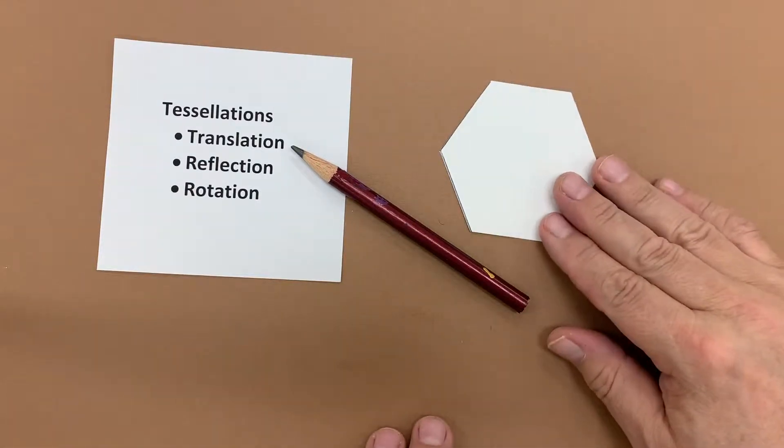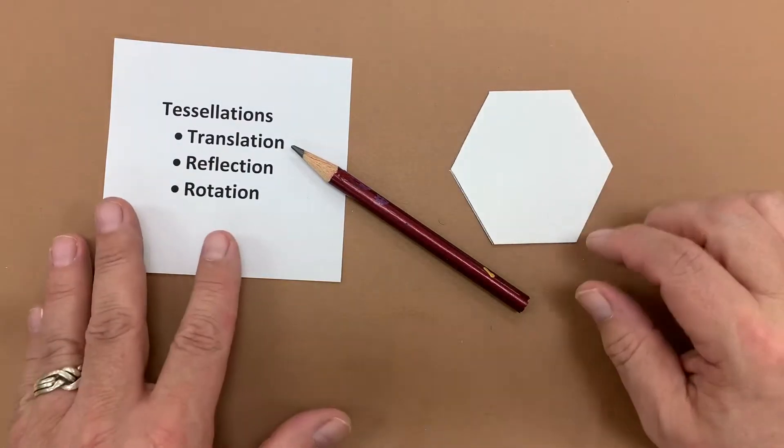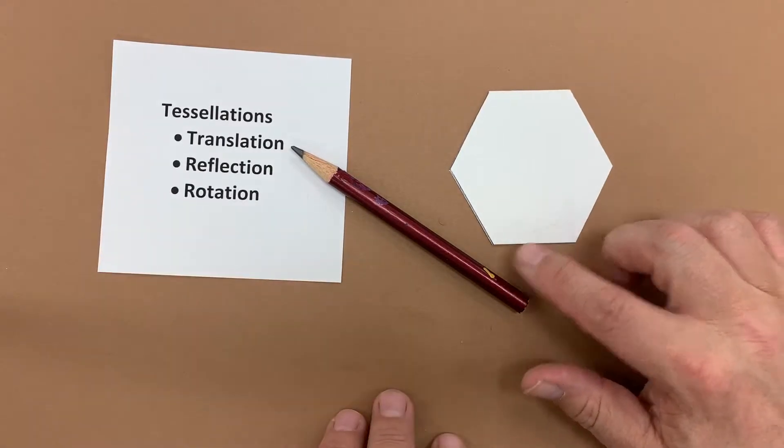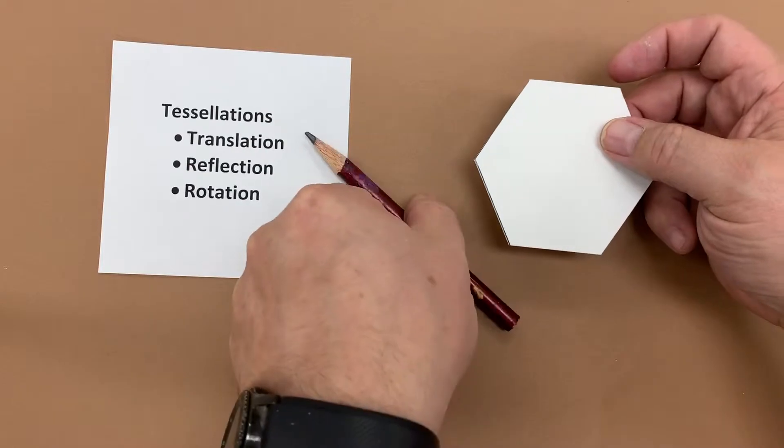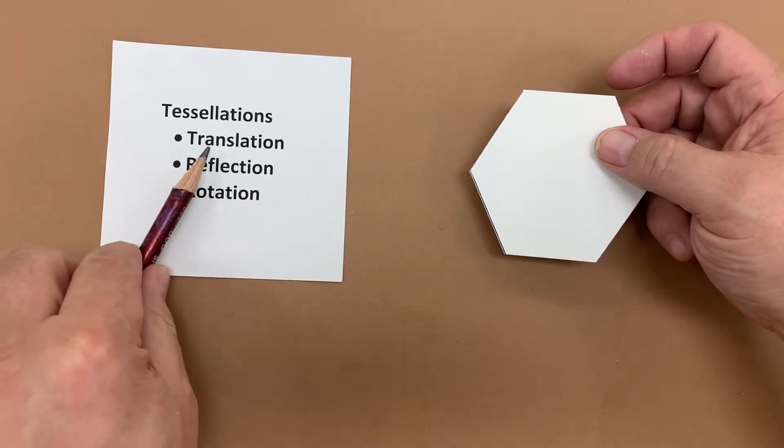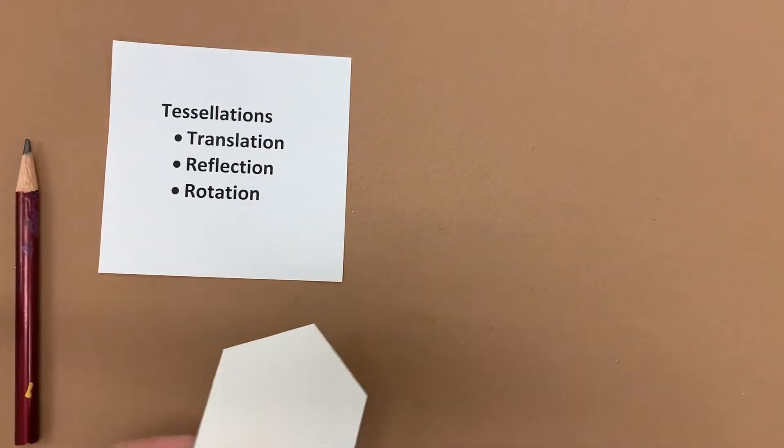All right now we're going to tessellate a hexagon. Hexagons are a little tougher because you can't really use a paper cutter to cut out hexagons very easily. So I have a little trick and we're going to be using the technique called translation to do these.